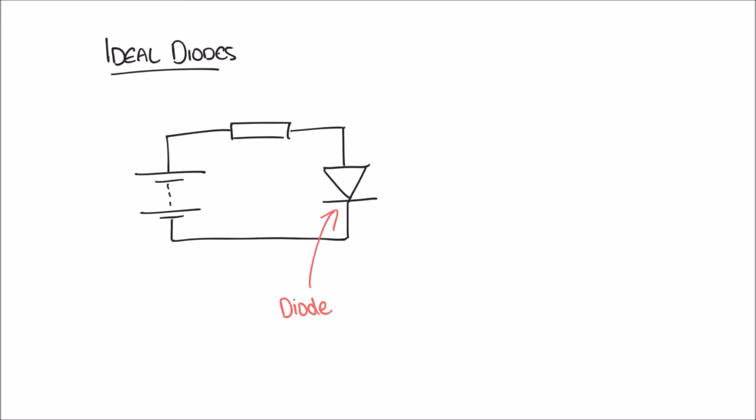In this video we're going to simplify things a little bit and look at what we call ideal diodes. Ideal diodes are where we make some assumptions about how diodes behave and simplify things a little bit. In the next video we're going to look at diodes in more detail, but for now we're just keeping things simple. The simplest way to think about a diode is a component that only allows current to flow in one direction.